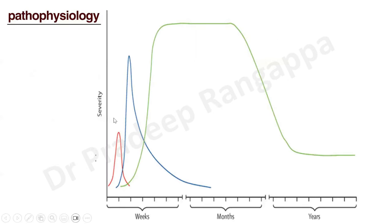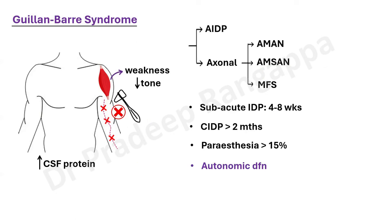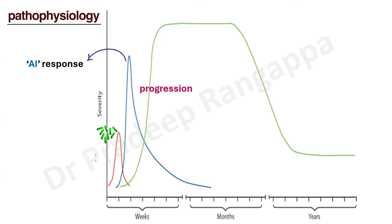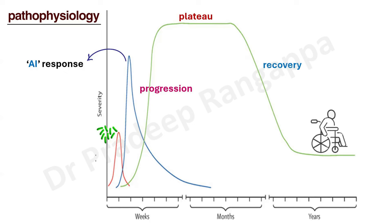When you look at the pathophysiology of Guillain-Barre, this is a very beautiful curve. In pathophysiology, you see three curves. The red curve is the infective phase — there is a trigger, such as Campylobacter or other viral infections. Once the infection abates, there is an autoimmune response a few days later. Then there is progression of the neuromuscular weakness over about a week, which attains a plateau, and then the recovery phase happens over months. Some patients continue to have some debility or disability in the later phase as well.